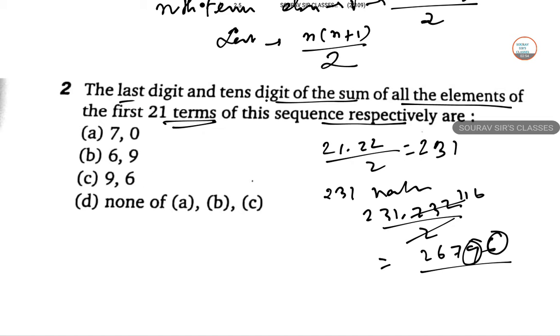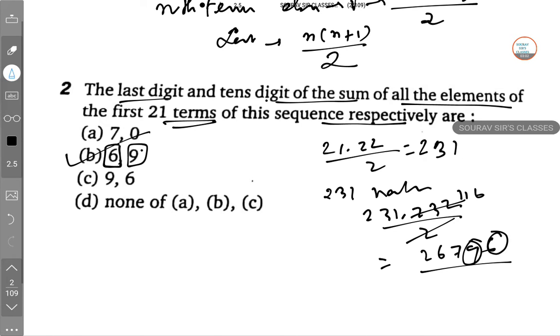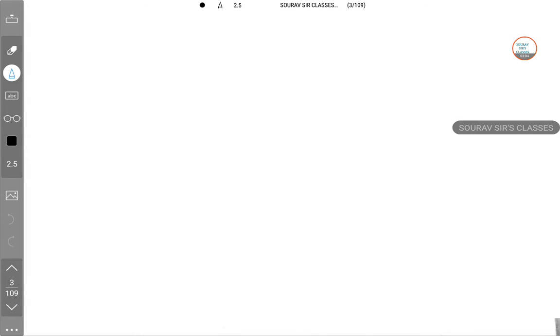Hence the last digit is 6 and the 10th digit is 9. So they have given it as last digit and the 10th digit of the sum. So this is the last digit and this is the 10th digit, 6, 9.